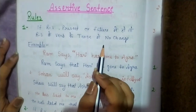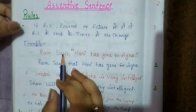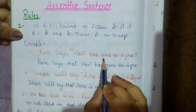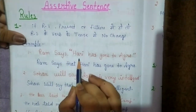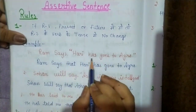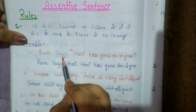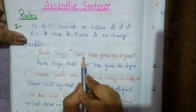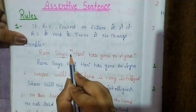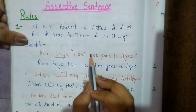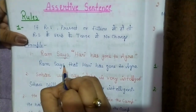For example: Ram says Hari has gone to Agra — Ram said that Hari has gone to Agra. So, 'says' is in present tense, therefore there will be no tense change — no change. Also notice, 'says' has no object here. Remember: if there is no object, 'says' remains 'says'.